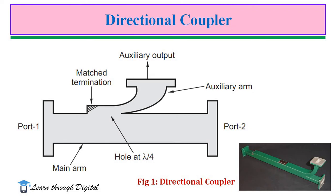This figure shows the directional coupler. There are four ports — port 1 and port 2 form the primary waveguide. The secondary waveguide is attached to the primary waveguide as the auxiliary arm, with port 3 and port 4. Output is taken from port 4 as the auxiliary output. Port 3 is a matched termination. These two waveguides are attached through a common slot, aperture, or hole provided between them.